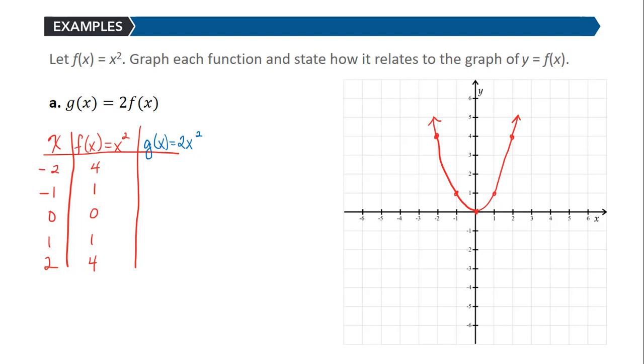So when the input is negative 2, 2 times 4 would be 8. When the input is negative 1, 2 times 1 is 2. 2 times 0 is 0. 2 times 1 is 2. 2 times 4 is 8. And you could also plug in, if I actually plugged in negative 2, I'd have 2 times negative 2 squared, which is 2 times 4, which is 8, just to confirm that that works. But again, it's saying twice the original function value, twice that original y value.